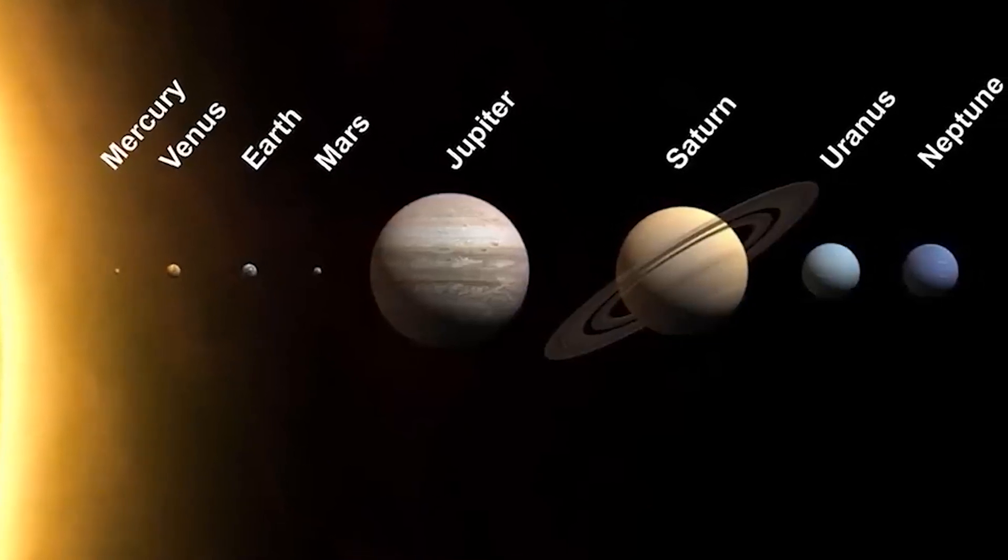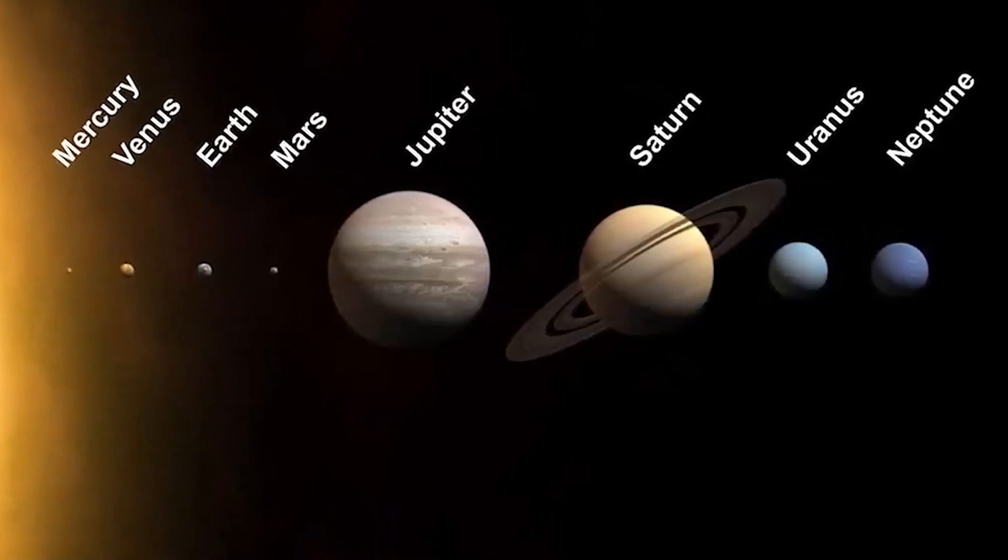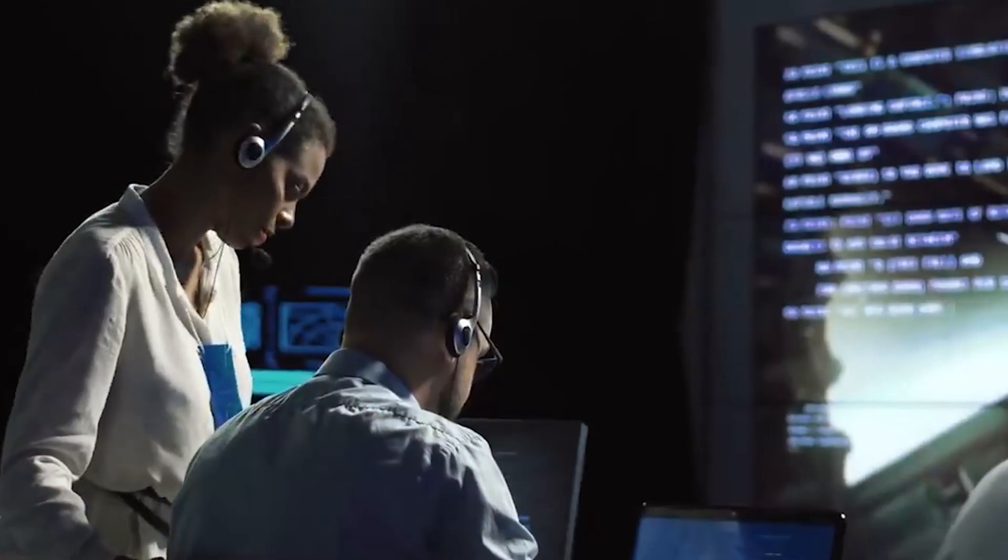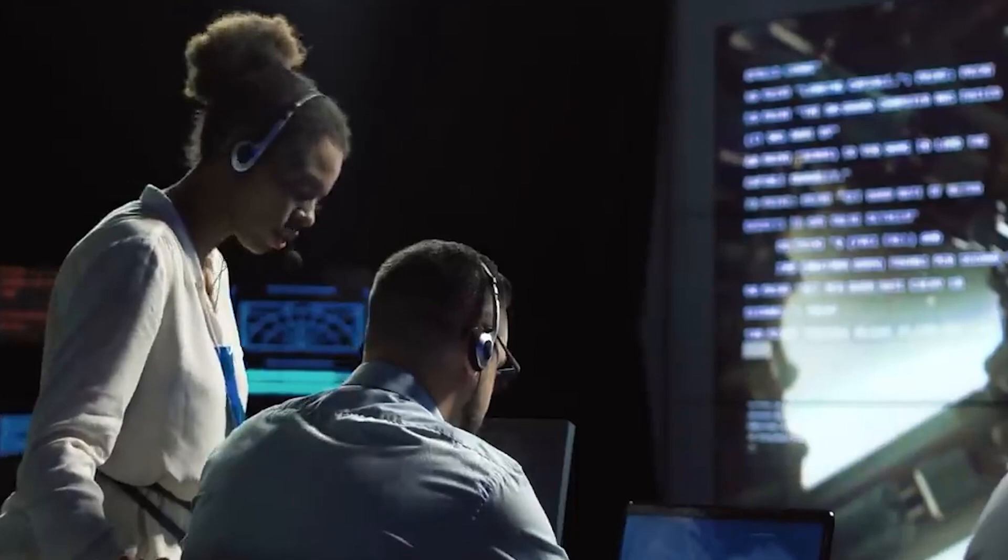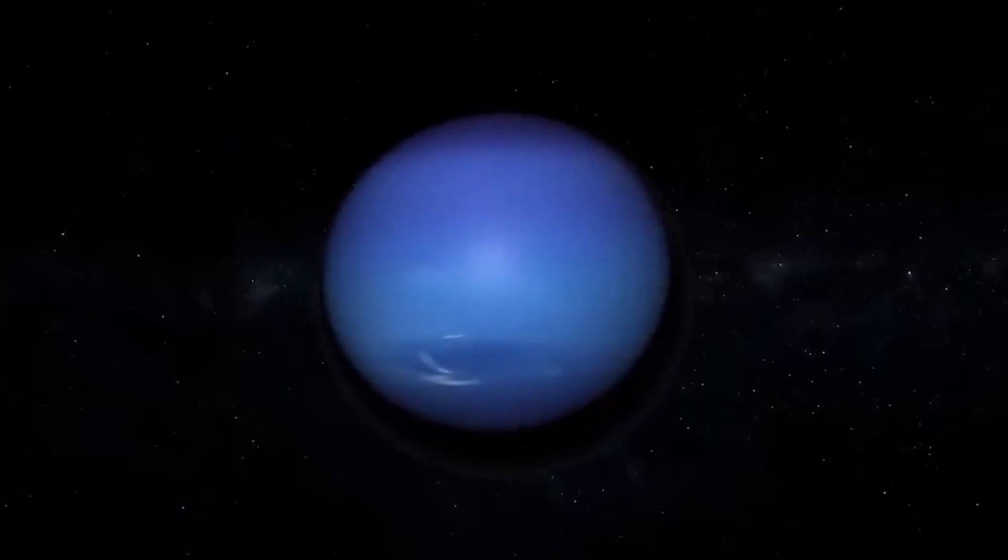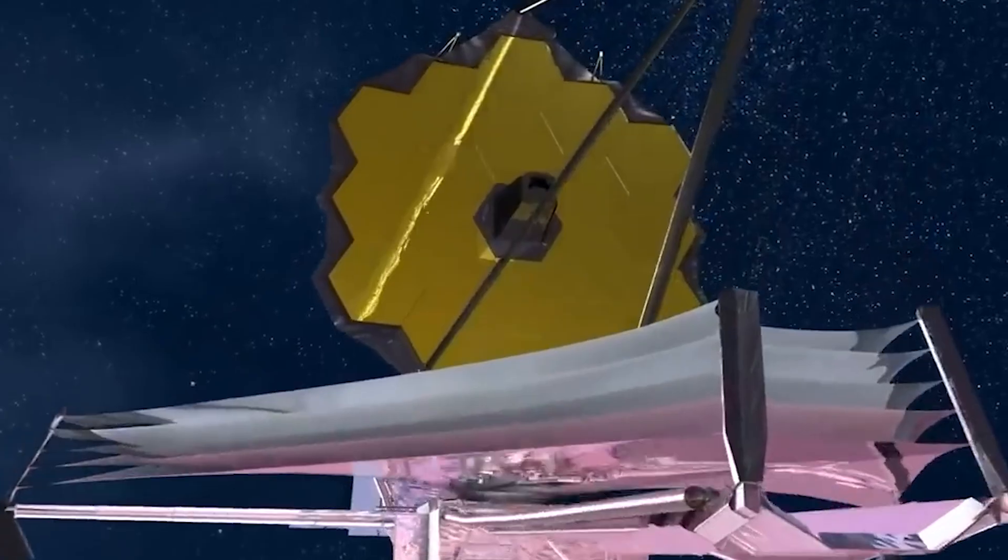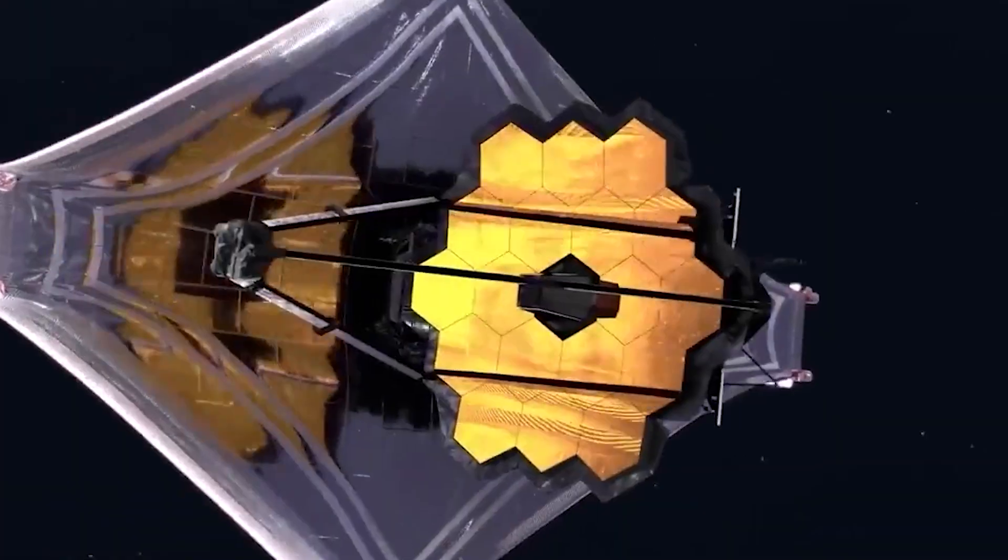Neptune is the farthest planet in our solar system, over 30 times farther from the sun than Earth. Because of its extreme distance, Neptune is impossible to see with the naked eye, even from the highest points on Earth. The only way to observe it is through powerful telescopes.